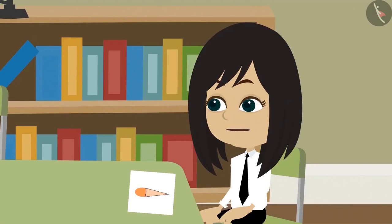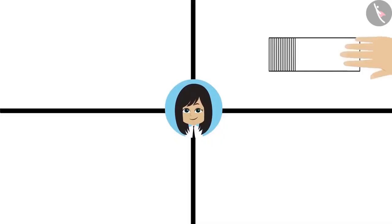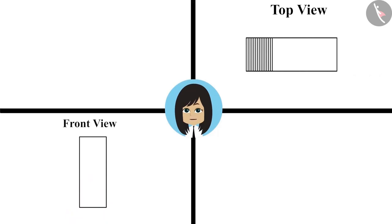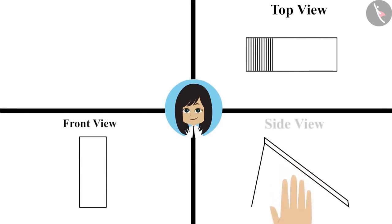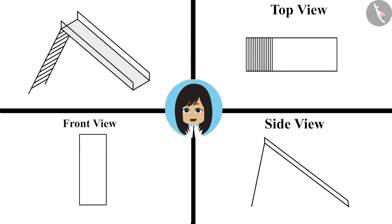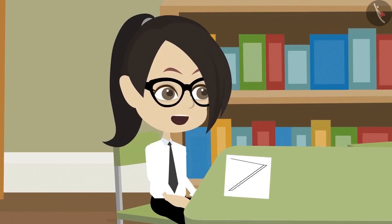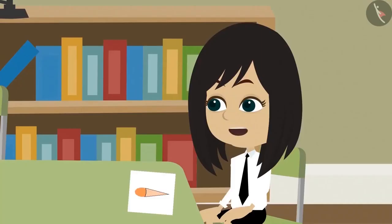Now I will try and guess. Its top view is a rectangle. Its front view is also a rectangle. It can be a box. Now after seeing its side view I will tell you what it is. Hey, its side view is like a swing in our park. This means it is a drawing of a swing. This was tough. This was fun. Let's make one more.